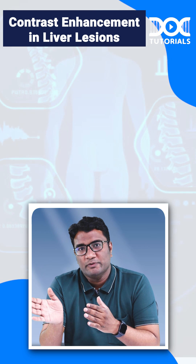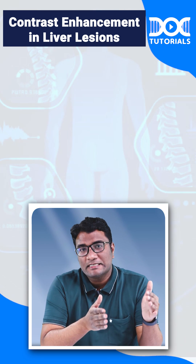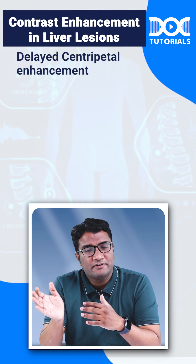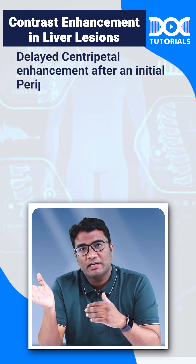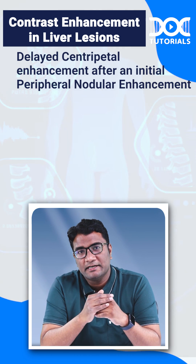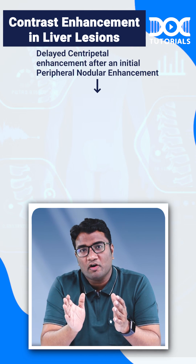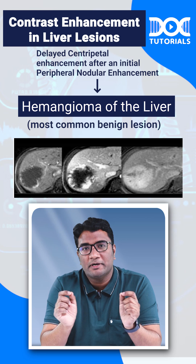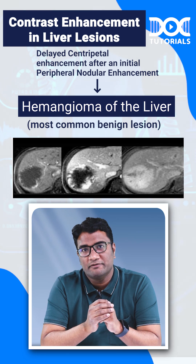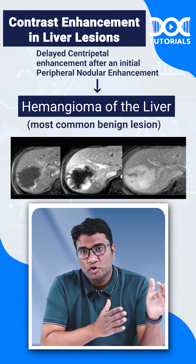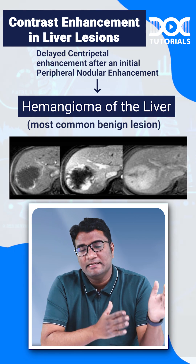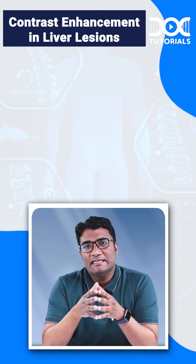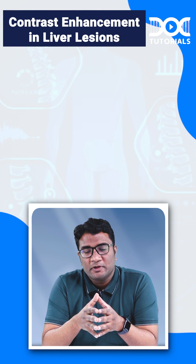If you see a lesion in the liver which shows a delayed centripetal enhancement after an initial peripheral nodular enhancement, think of a hemangioma of the liver, the most common benign lesion of the liver. Hemangioma of the liver shows a delayed centripetal enhancement.